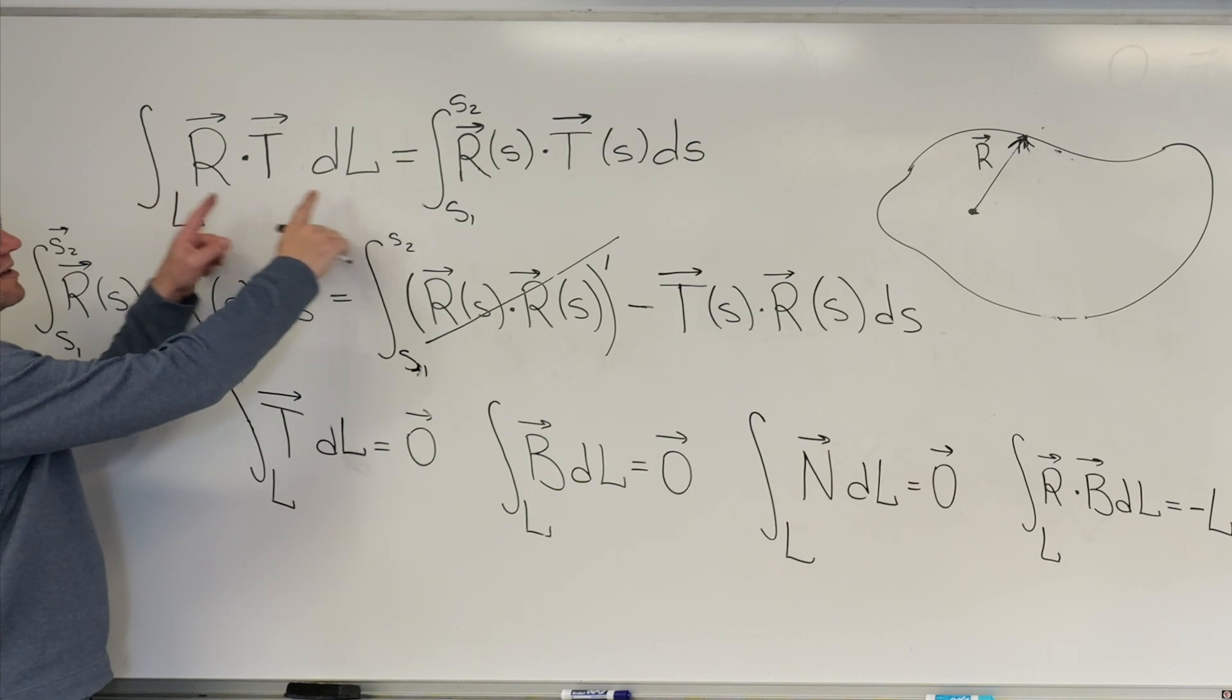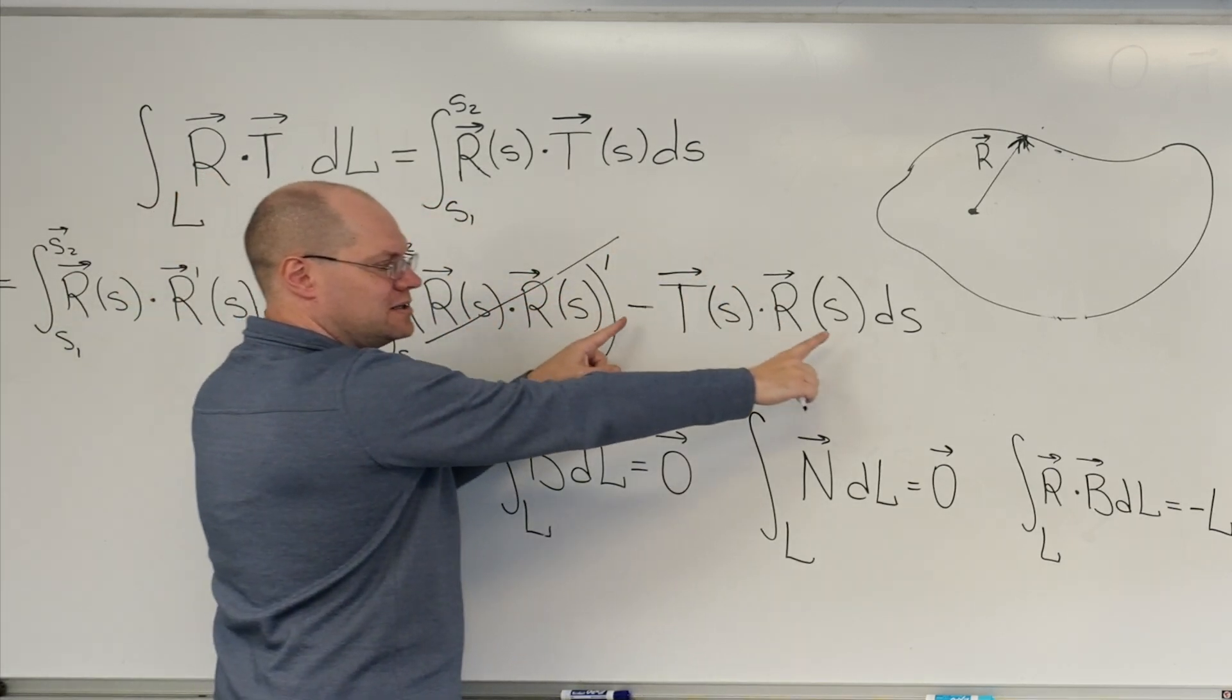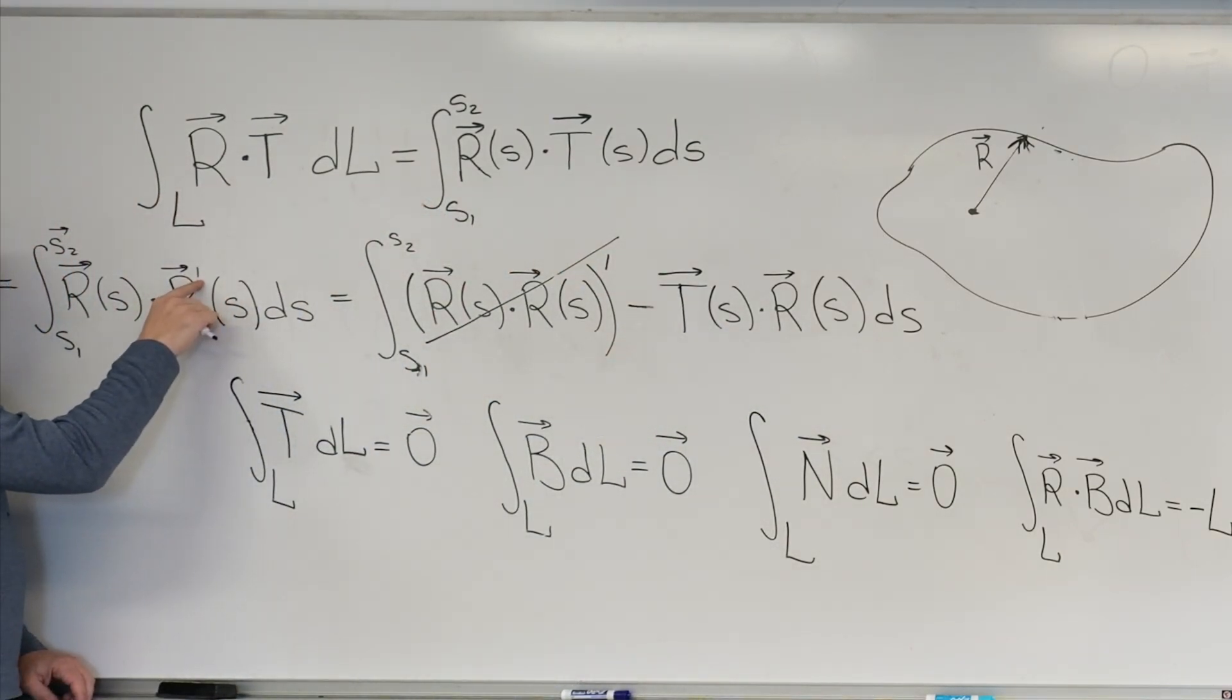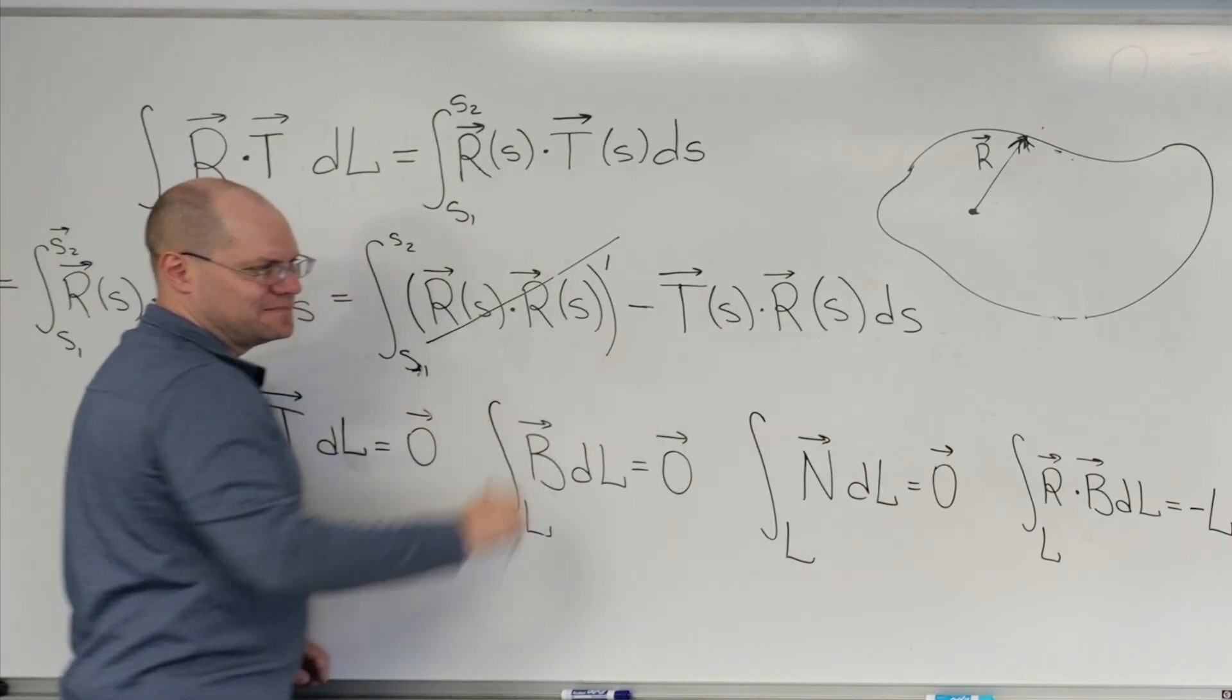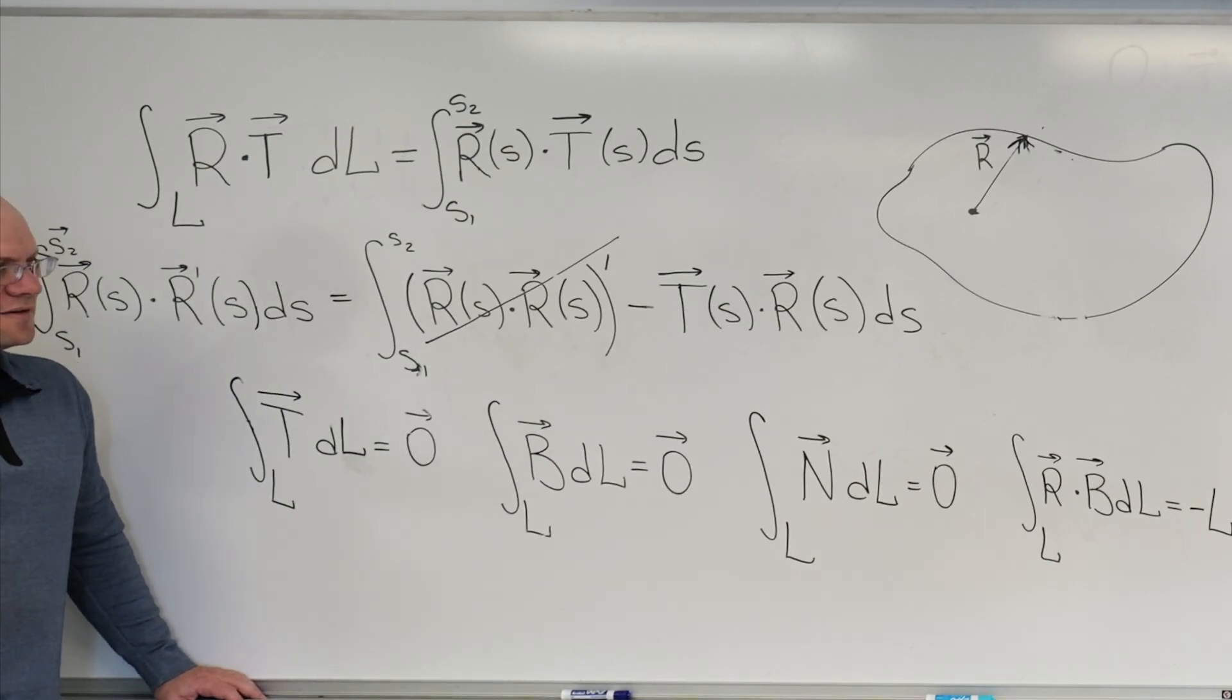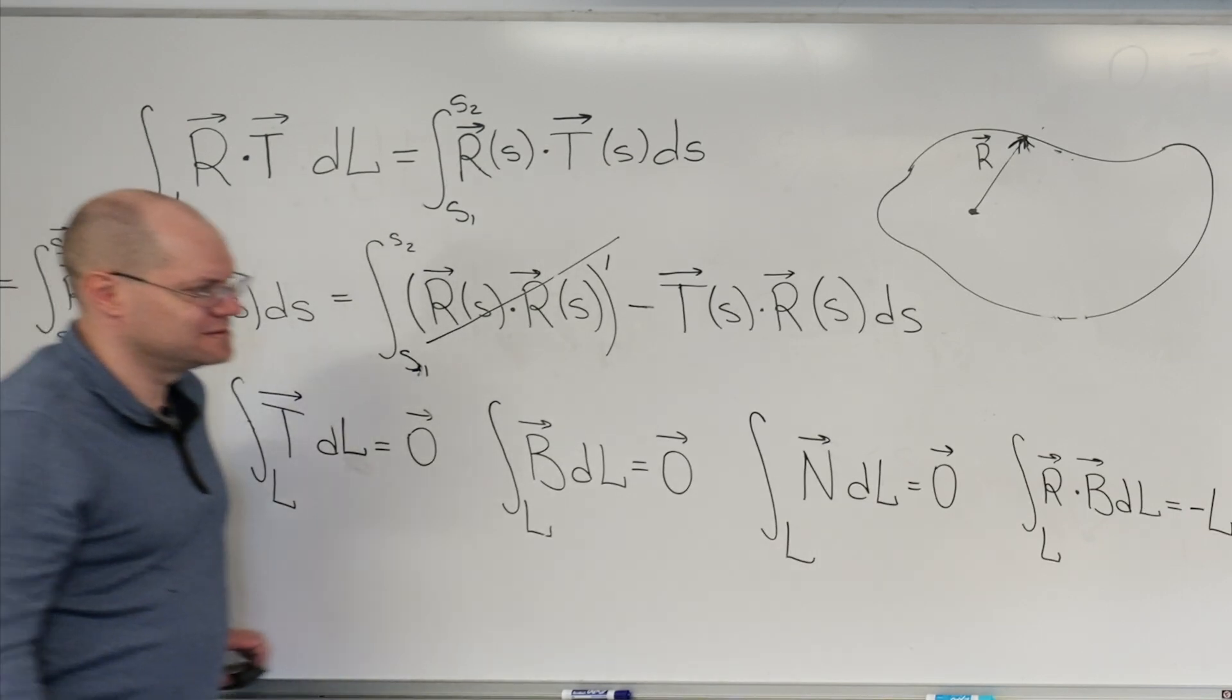And now you realize that the integral equals minus itself. Because it's a wonderful expression where when you throw the prime from one term to the other, by commutativity, it's the same term, except with a minus sign. So the integral equals minus itself. And therefore, equals zero. I count it as a beauty.